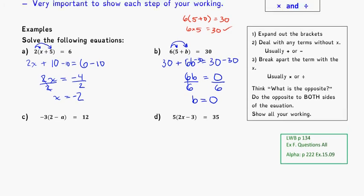Next two examples. Again, expand them out. So that's negative 3 times 2, which is going to give us negative 6. And negative 3 times negative a. Watch out for this. That's a negative a. So negative times a negative becomes a positive, and that's 3a. So again, negative 3 times 2 is negative 6. And negative 3 times negative a gives us positive 3a. And that's going to be equal to 12.